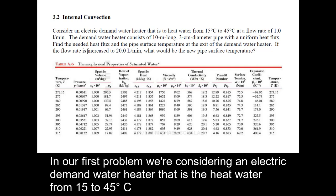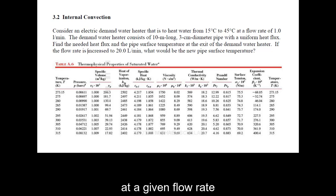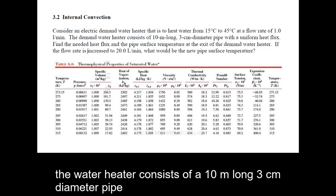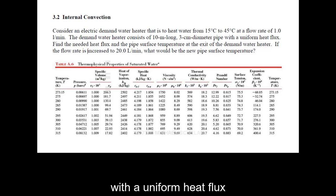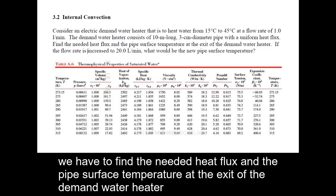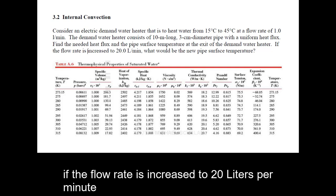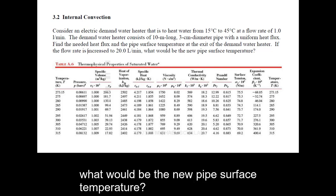Our first problem: we're considering an electric demand water heater that is to heat water from 15 to 45 degrees Celsius at a given flow rate. The water heater consists of a 10-meter long, 3-centimeter diameter pipe with a uniform heat flux. We have to find the needed heat flux and the pipe surface temperature at the exit, and then determine the new pipe surface temperature if the flow rate is increased to 20 liters per minute.